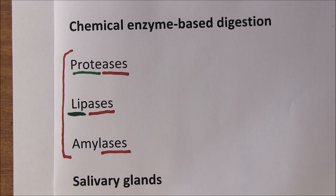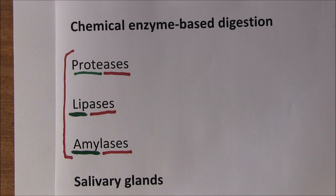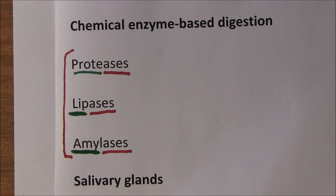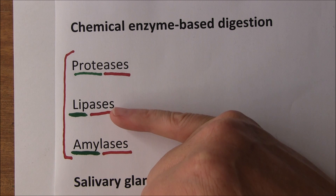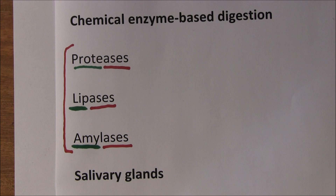Lipase — 'lip' is to do with fat — so lipases digest fats. Amylases are related to carbohydrates, so these are the carbohydrate-digesting enzymes. The vast majority of digestion is done by enzymes in these three categories. Now we want to think about the components of the gastrointestinal tract and the enzymes present there.